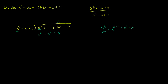So we have negative x to the third. Negative 1 times negative x squared is positive x squared. And positive x times negative 1 is negative x. Now let's add everything. x to the third minus x to the third — those cancel out. 0 plus x squared gives us x squared. 5x minus x gives us plus 4x. And then we bring down this minus 4.